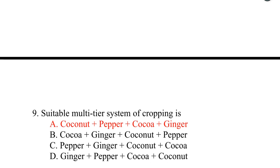9th one. The suitable multi-tier system of cropping is coconut with pepper, cocoa, and ginger. The correct answer is option A: coconut, pepper, cocoa, ginger. This arrangement allows sunlight to be received uniformly by all four plants.